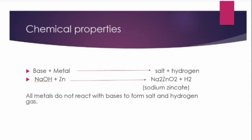Moving on to chemical properties — we will compare with acids. When we learned about acids, the first reaction was: acids react with metals to form salt and hydrogen gas. Here also, bases react with metals to form salt and hydrogen — a similar reaction. For example, taking sodium hydroxide and adding zinc to it, we get sodium zincate (Na2ZnO2) as the salt, and hydrogen gas is evolved. To test for hydrogen, bring a matchstick near it — if it burns with a pop sound, it is hydrogen.